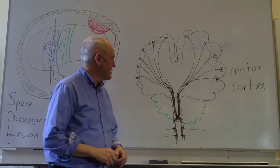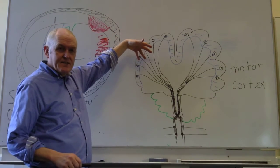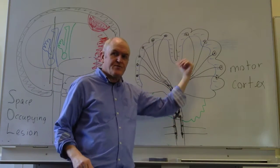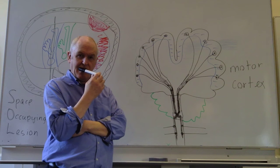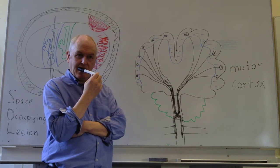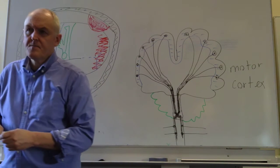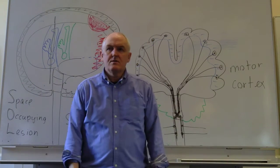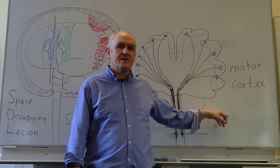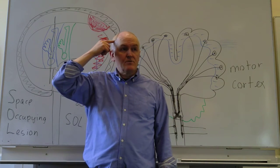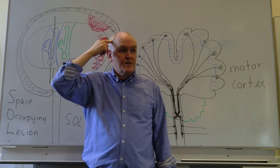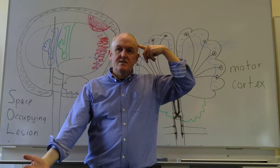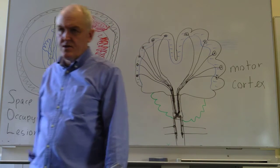So, all the fibres from the right have crossed over to the left, and all the fibres from the left have crossed over to the right. That means the left-hand side of the body is controlled by the right motor cortex, and the right-hand side of the body is controlled by the left motor cortex — because it crosses over.